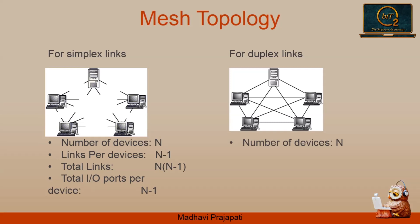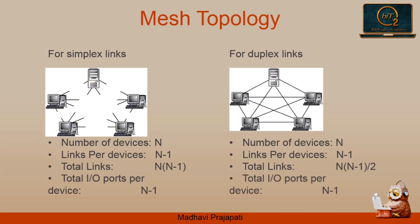Consider n devices where every device is connected with each other. Therefore n-1 links are there per device. Since sending and receiving is done by the same link, node 1 has n-1 connections, node 2 has n-2 connections, and so on until node n has 0 connections. So the total physical links are n times (n-1) divided by 2. Total input-output ports used per device is n-1.